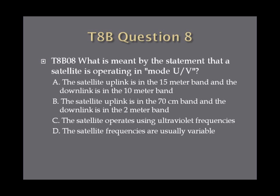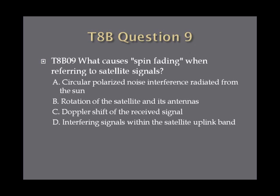Question 8: What is meant by the statement that a satellite is operating in mode UV? A. The satellite uplink is in the 15-meter band and the downlink is in the 10-meter band. B. The satellite uplink is in the 70-centimeter band and the downlink is in the 2-meter band. C. The satellite operates using ultraviolet frequencies? Or D. The satellite frequencies are usually variable. Question 9: What causes spin fading when referring to satellite signals? A. Circular polarized noise interference radiated from the sun. B. Rotation of the satellite and its antennas? C. Doppler shift of the received signal? Or D. Interfering signals within the satellite uplink band?